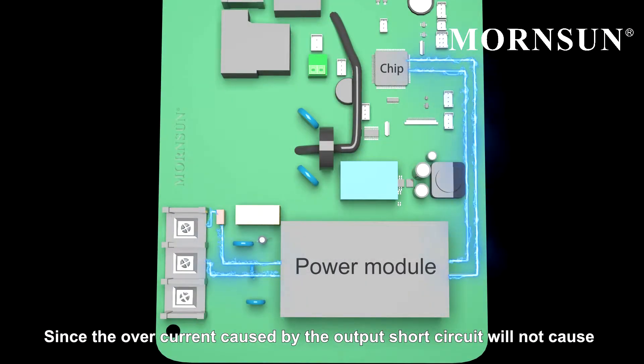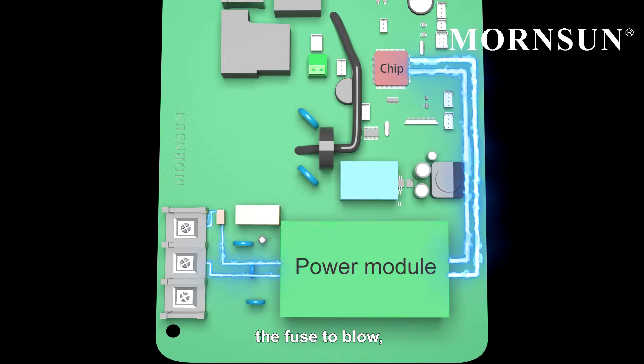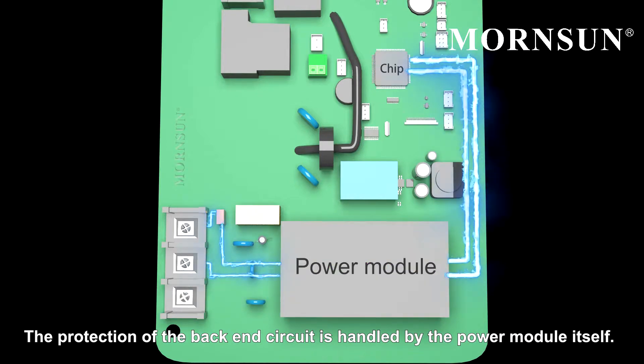Since the overcurrent caused by the output short-circuit will not cause the fuse to blow, the protection of the backend circuit is handled entirely by the power module itself.